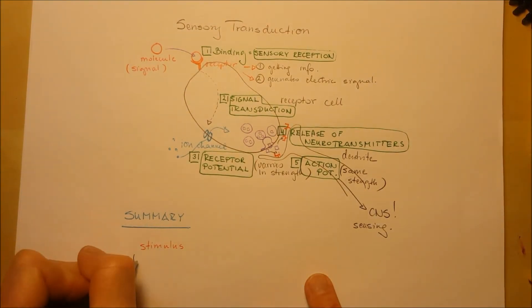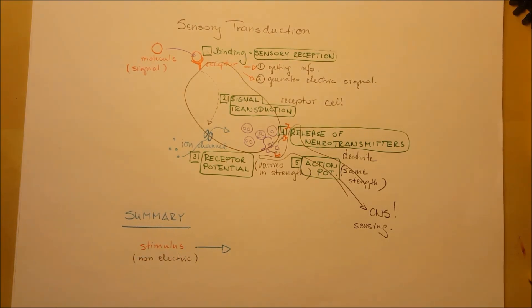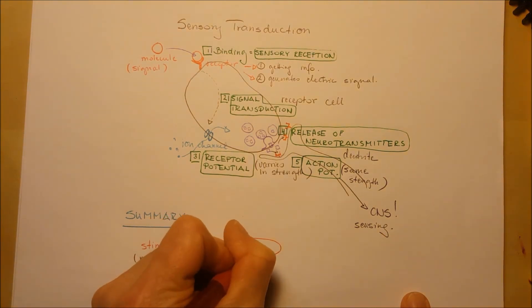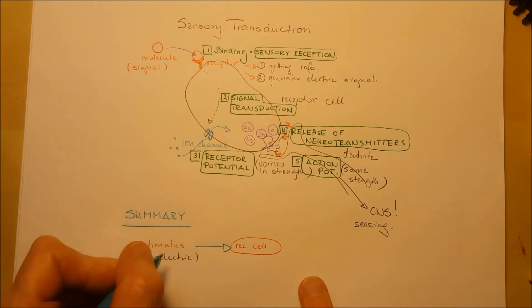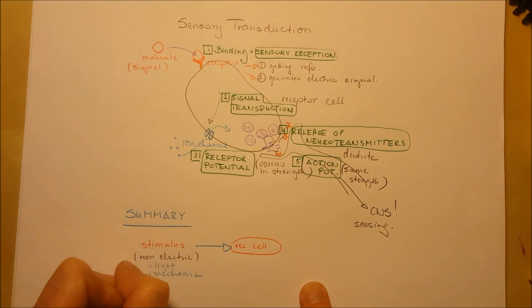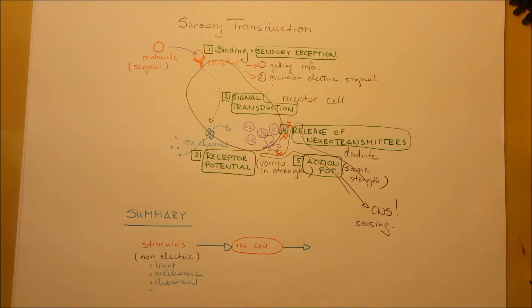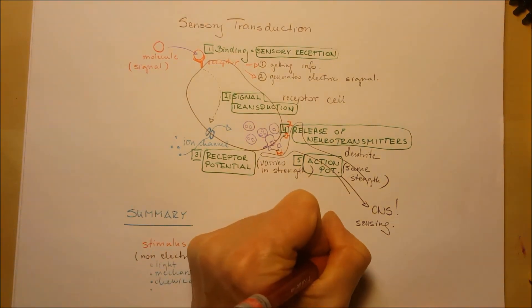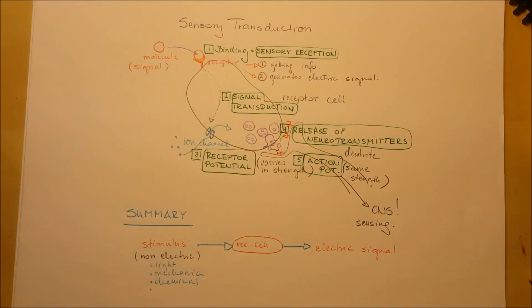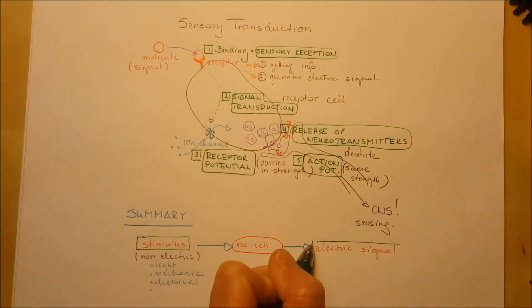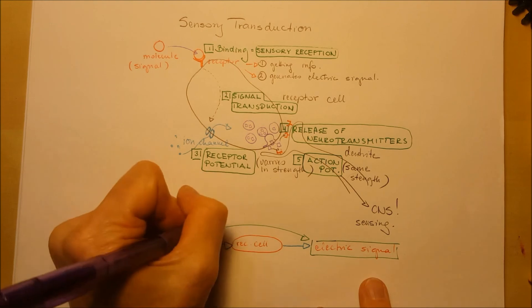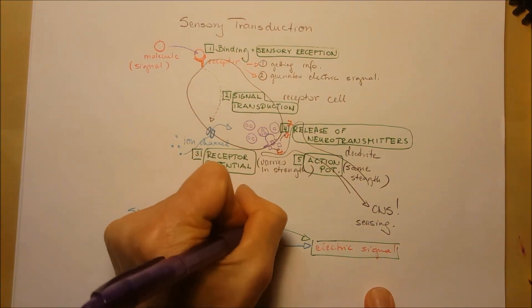So summarizing, we have the stimulus that is non-electric. It can be light, mechanic, or chemical stimulus. The receptor cells that are specific for the stimulus will get the stimulus, will get the signal. And the receptor cell is going to make electric signal out of that non-electric stimulus or non-electric signal. So this arc from stimulus to electric signal is called the sensory transduction.